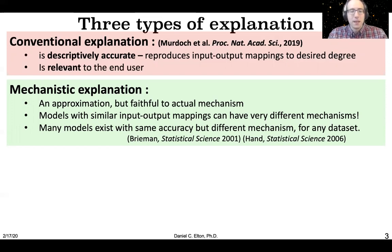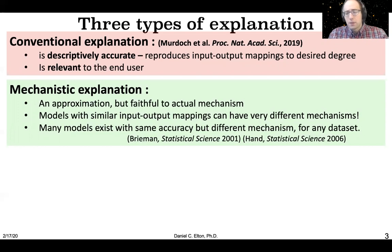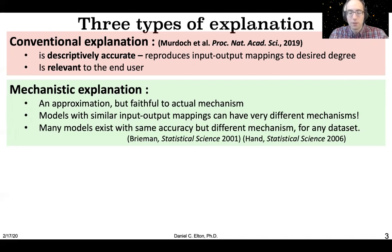A mechanistic explanation is different — it's also an approximation, but actually faithful to the underlying mechanism by which the model is functioning. This is very important because you can have two models that have very similar or even identical input-output mappings on a certain dataset, but work very differently under the hood. To build trustworthy, robust AI, we'd really like to know how these things are functioning under the hood and whether they will continue to function well in the field.